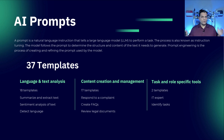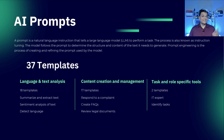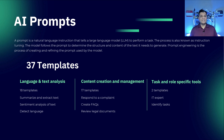Each category has important templates already available that you can build on. On the left side, language and text analysis has 18 templates — examples include summarize and extract text, sentiment analysis, and language detection. On the far right, task and role specific tools has only two templates, used by IT experts and to identify tasks.